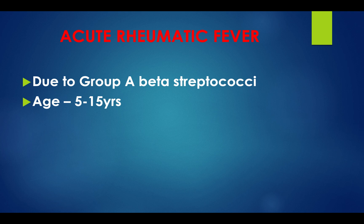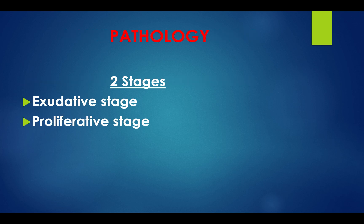Acute rheumatic fever is caused by group A beta-streptococcus, typically affecting ages 5 to 15 years. Pathology occurs in two stages: the exudative stage and the proliferative stage.